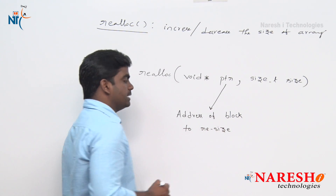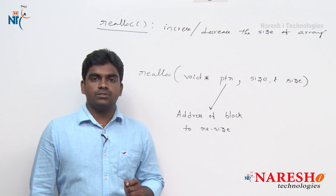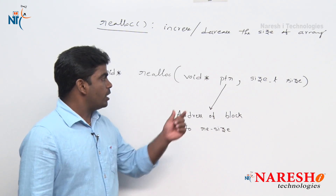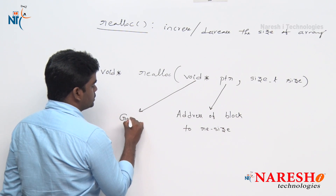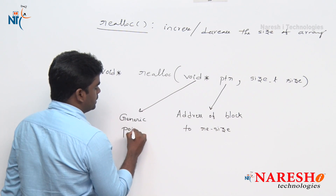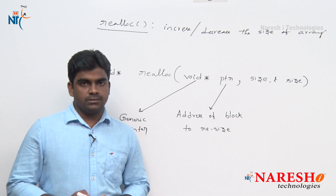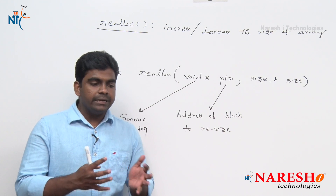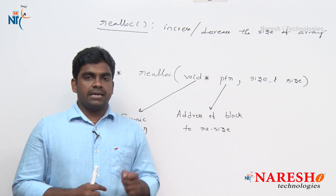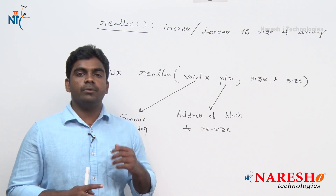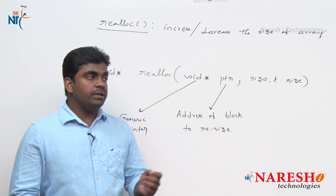Resize means either increase or decrease. If you want to increase or decrease the size of the block, you specify the block address. Why is it a void pointer? Because a void pointer is a generic pointer — it can accept any type of block address. In all cases we are not using only integer arrays or only float type. Any type of array — integer, float, double, structure type, user-defined type — it will accept.